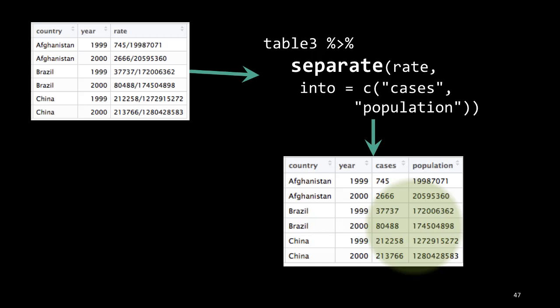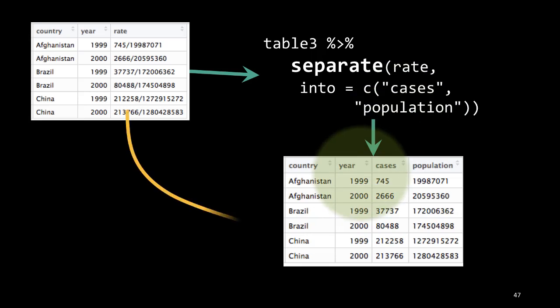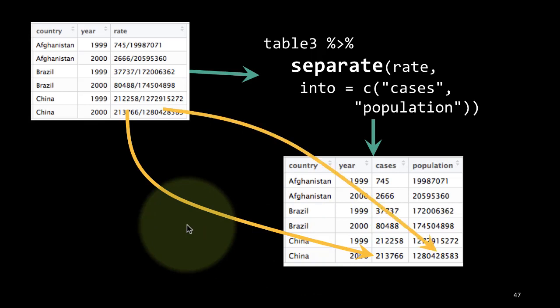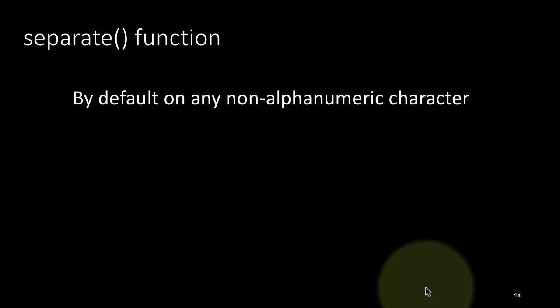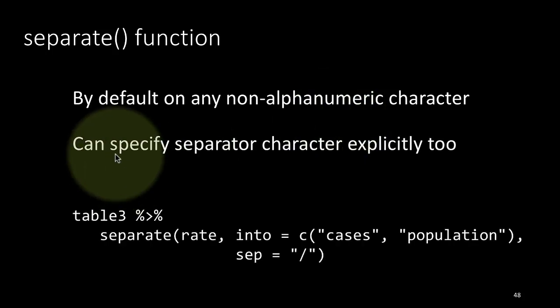Of course we can specify the actual separation character to use. By default it does sensible things, but sometimes we may not want the default and may want to control the separation character. The separate function by default separates on any non-alphanumeric character — one that is neither an alphabet nor a number — and treats it as a separator. But we can also specify the separator character explicitly.